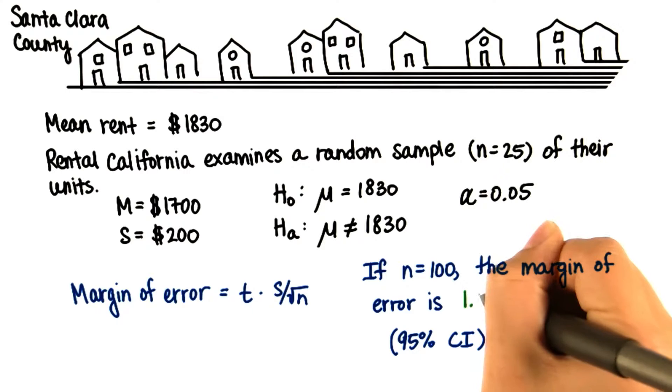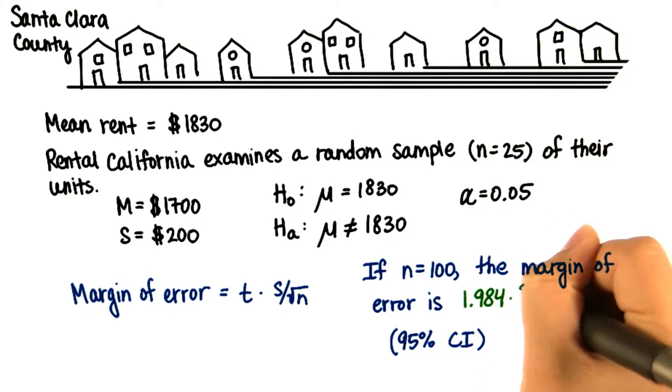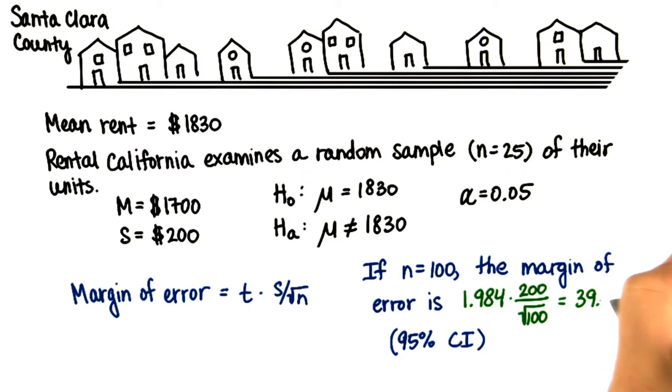Therefore, the margin of error is 1.984 times s divided by root n, and this is 39.68.